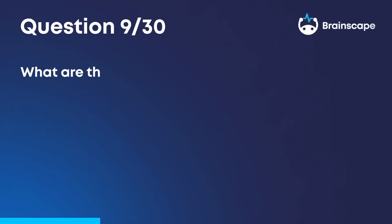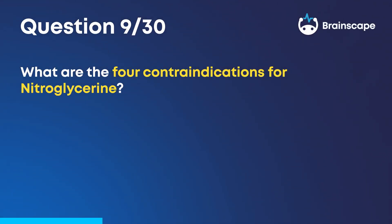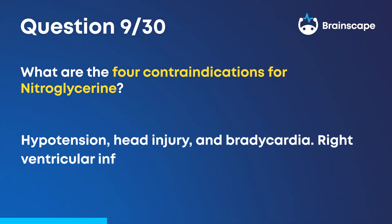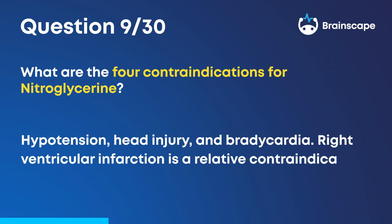Question 9. What are the four contraindications for nitroglycerin? Hypotension, head injury, and bradycardia. Right ventricular infarction is a relative contraindication.